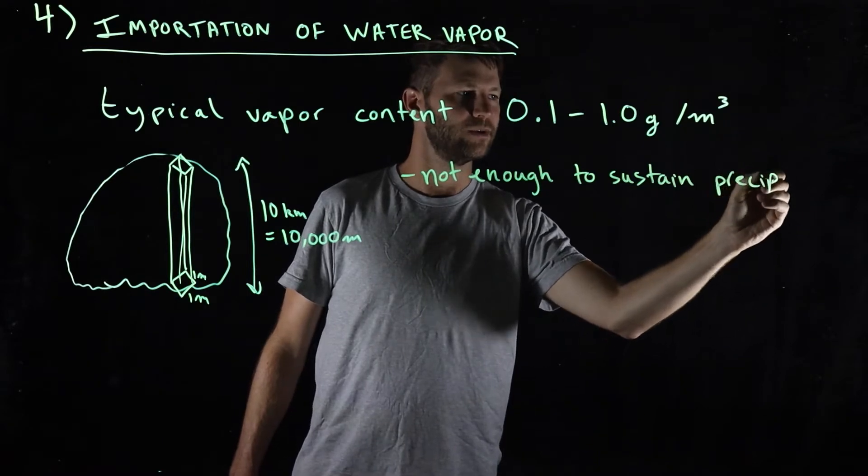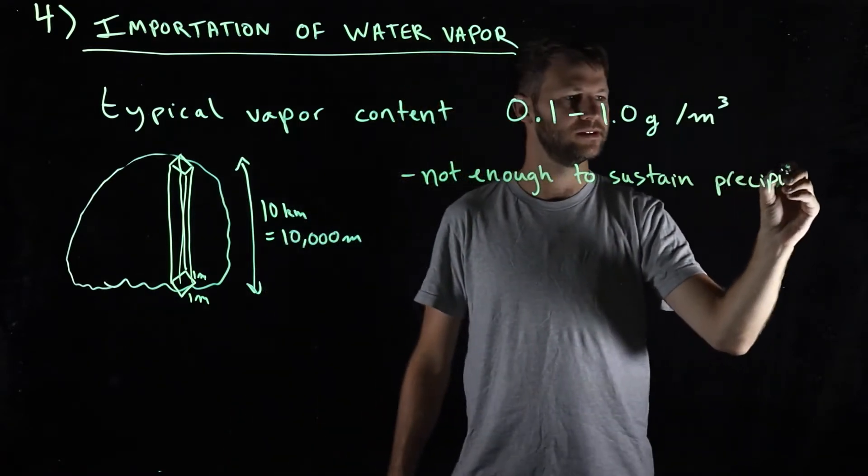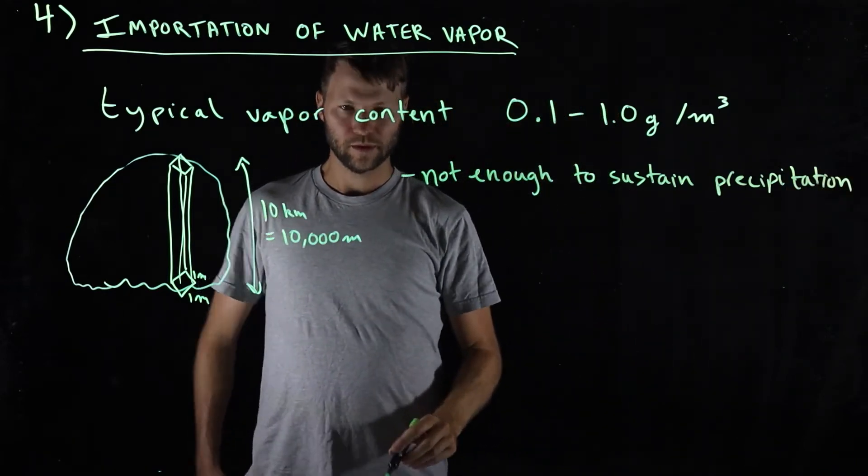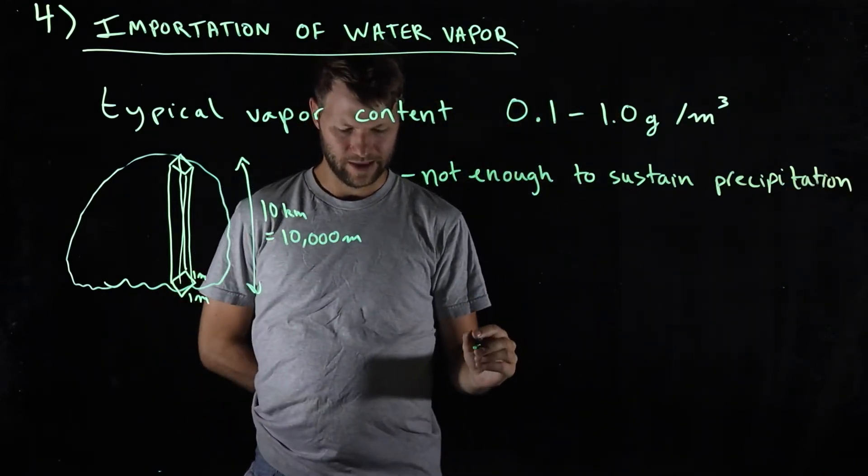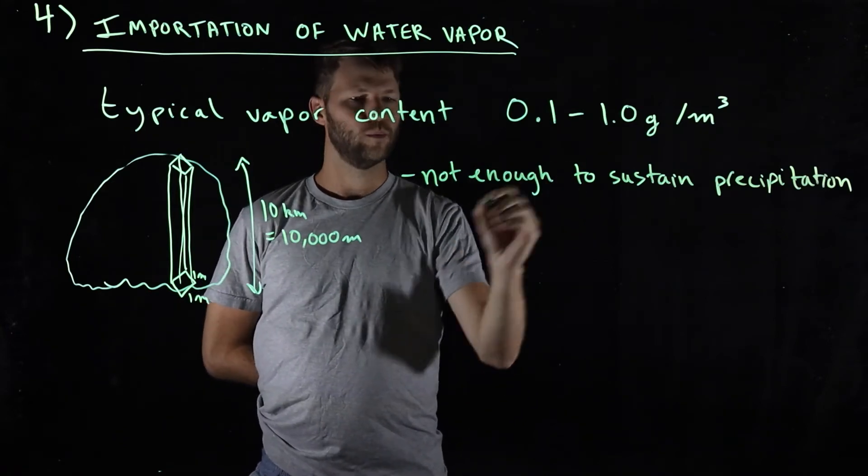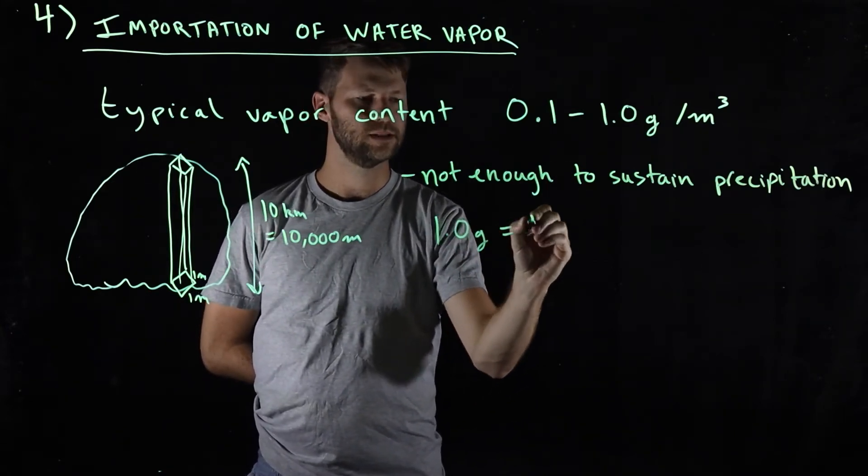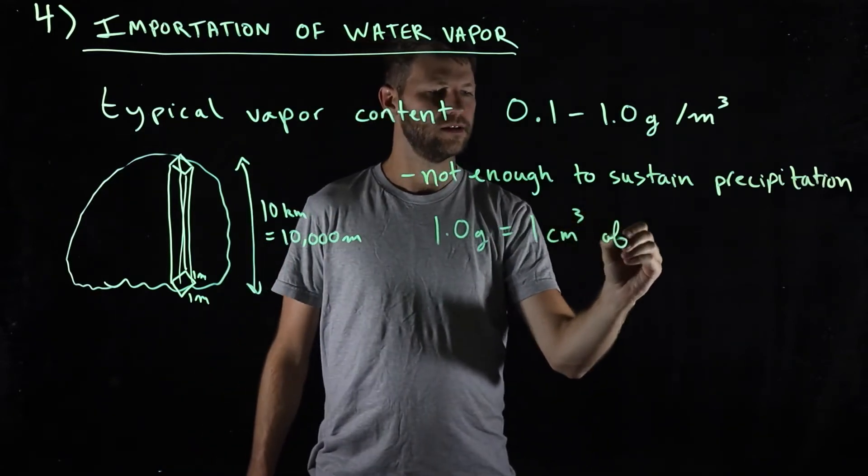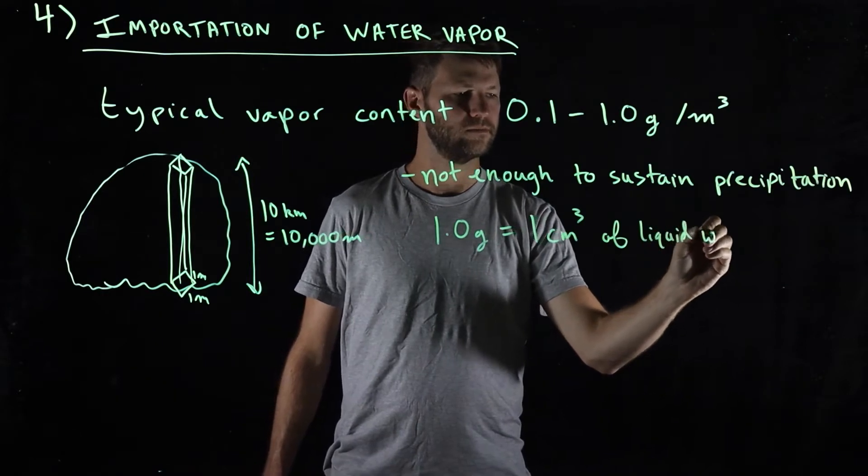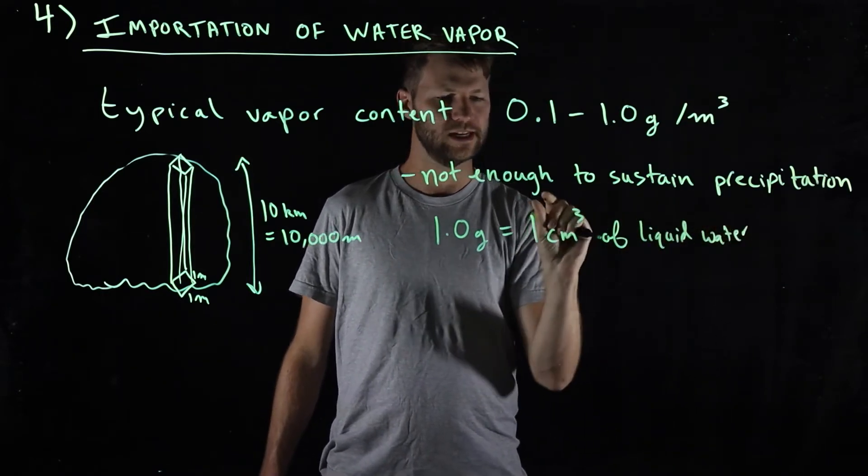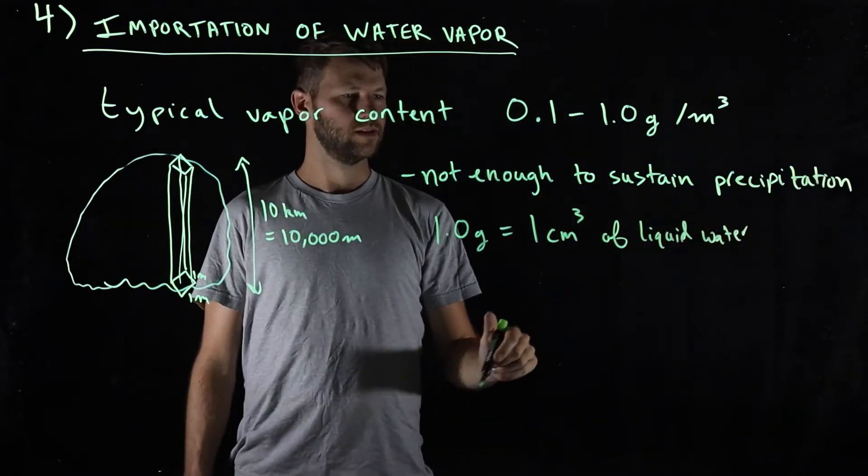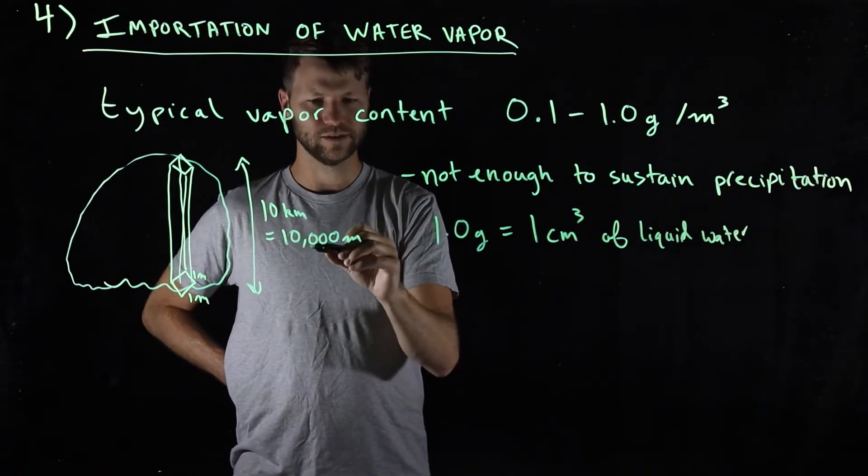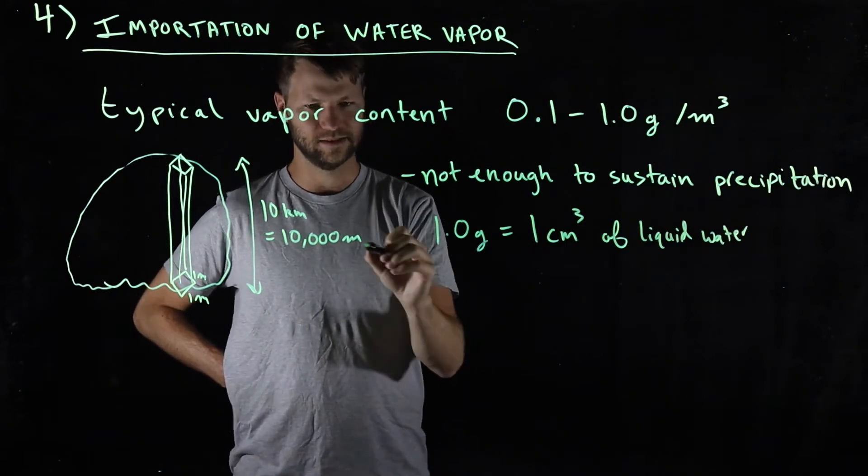Let's do some calculations to see why that is. We know, for example, that 1 gram of water is equal to 1 cubic centimeter of liquid equivalent. One tiny little cubic centimeter.